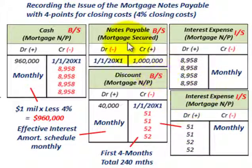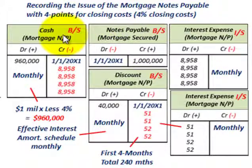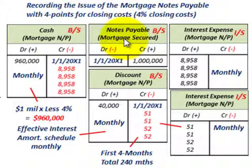To summarize mortgage notes payable: when closing costs are involved, you must determine those costs — they reduce the cash you receive. Set up a discount on mortgage notes payable as a contra account to notes payable, and set up cash for the amount actually received. Then recognize the fixed interest payments on a monthly basis, and amortize the discount on notes payable monthly as well. That covers mortgage notes payable — calculating interest expense and recording it on your balance sheet and income statement.